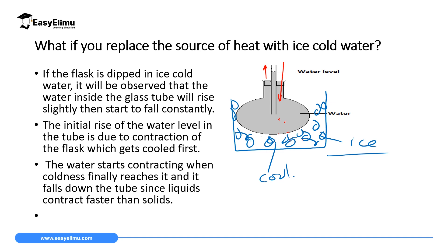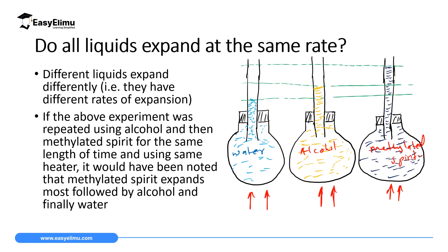To summarize the cooling observation: the water level rises slightly because the flask gets the coldness first and contracts, so the water rises to occupy the larger relative volume. After some time the coldness reaches the water, and since liquids contract more than solids, the water contracts more than the flask and occupies a smaller volume — that is why the liquid inside the straw falls constantly.